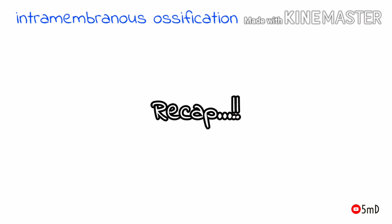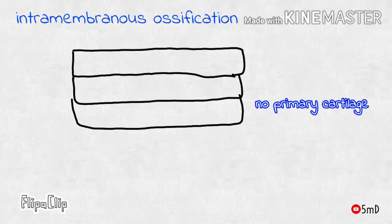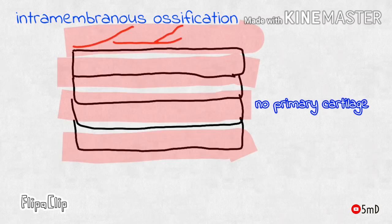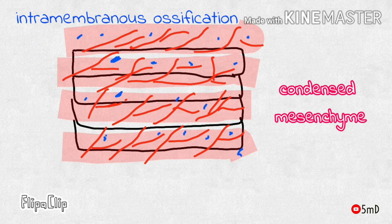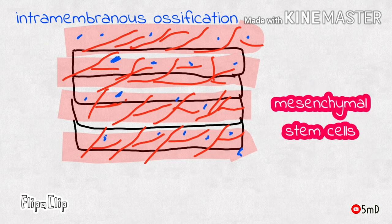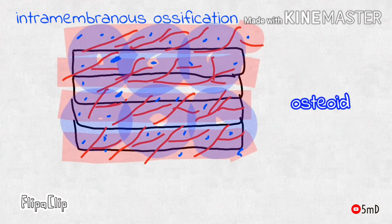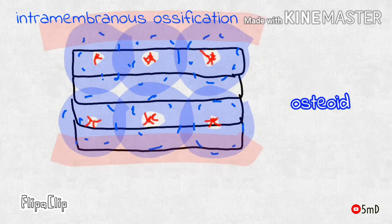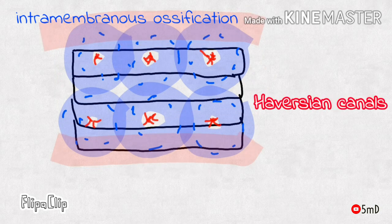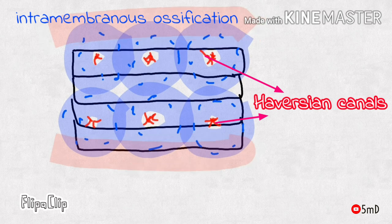To recap intramembranous ossification: there is no primary cartilage template; bone is formed directly on highly vascular condensed mesenchyme containing undifferentiated mesenchymal cells that differentiate into osteoblasts and secrete osteoid. Capillary networks are retained within the uncalcified osteoid matrix, forming haversian canals. The osteoid eventually mineralizes, trapping osteoblasts which become osteocytes, forming the haversian system.